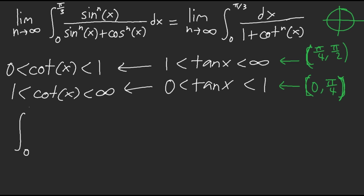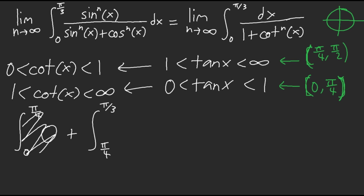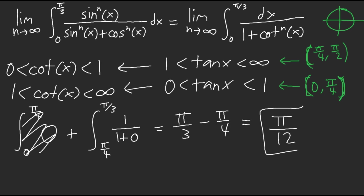From 0 to π/4, cotangent is bigger than 1. So when n approaches infinity, it goes to infinity, meaning the integral over that region is 0. Now we're left with π/4 to our upper bound of π/3. Here, cotangent is between 0 and 1, so when n goes to infinity, cotangent^n equals 0. We're left with 1 plus 0, which is just 1. So our answer is π/3 minus π/4, which equals π/12.